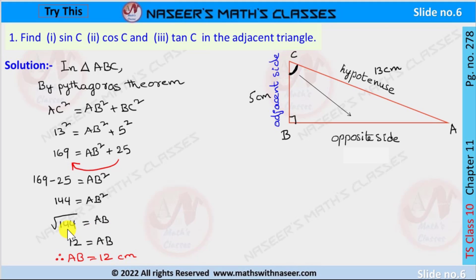144 is written as 12 squared, then after removing the square root we can write it as 12. Therefore AB is equal to 12 cm.